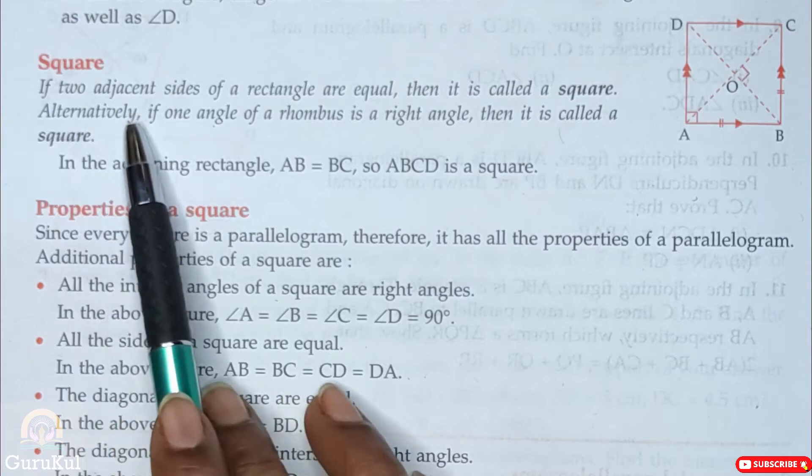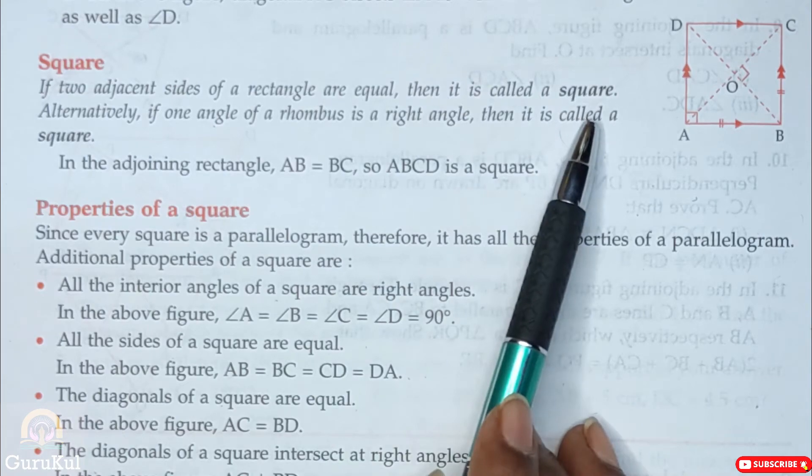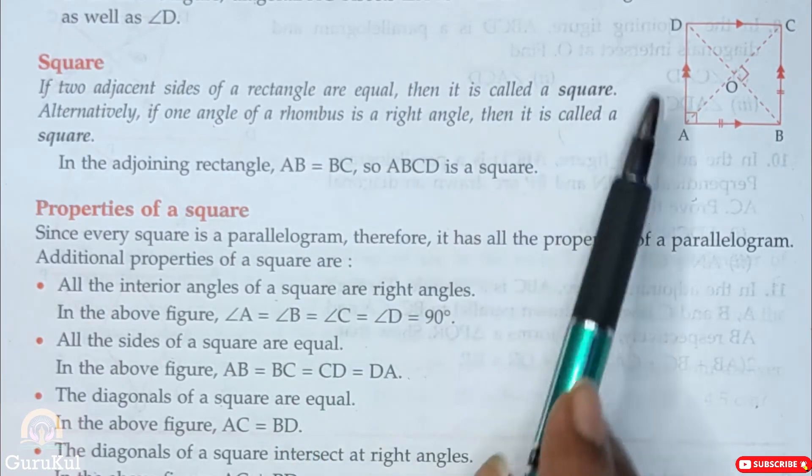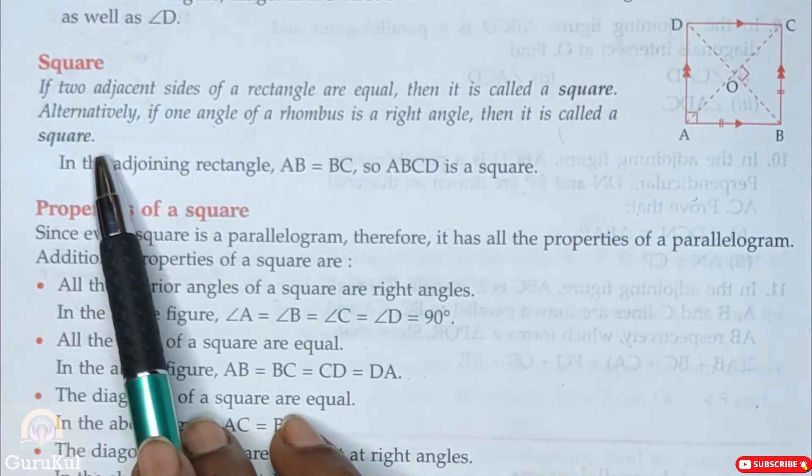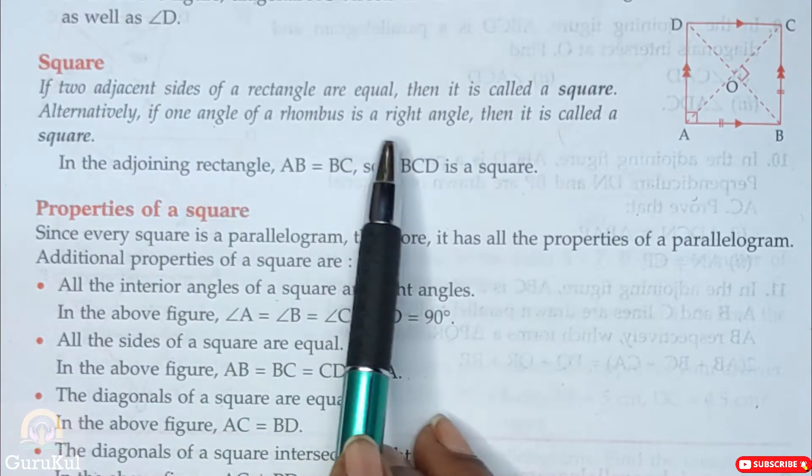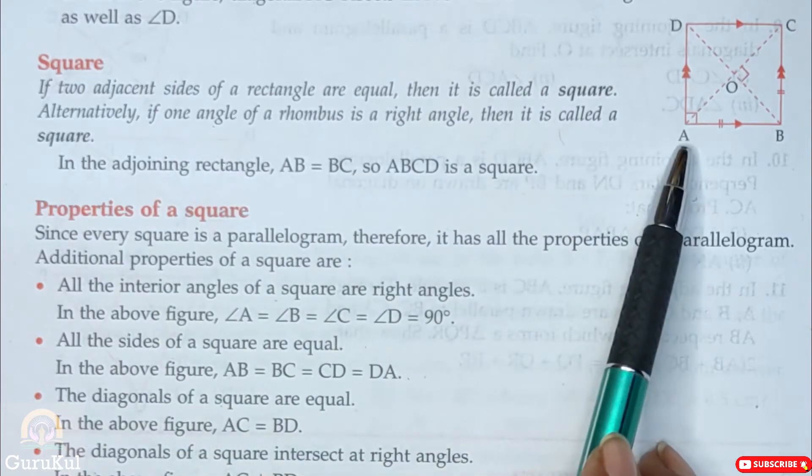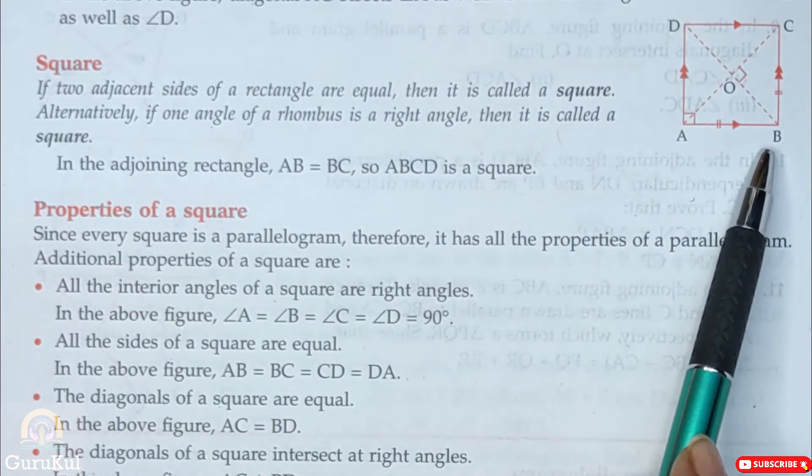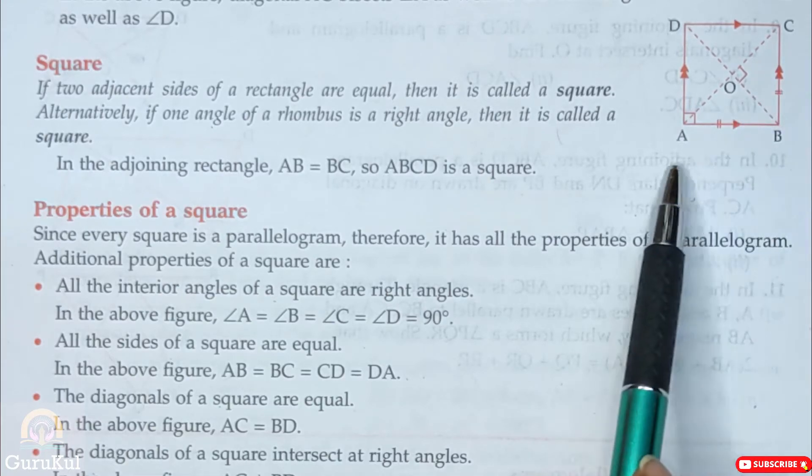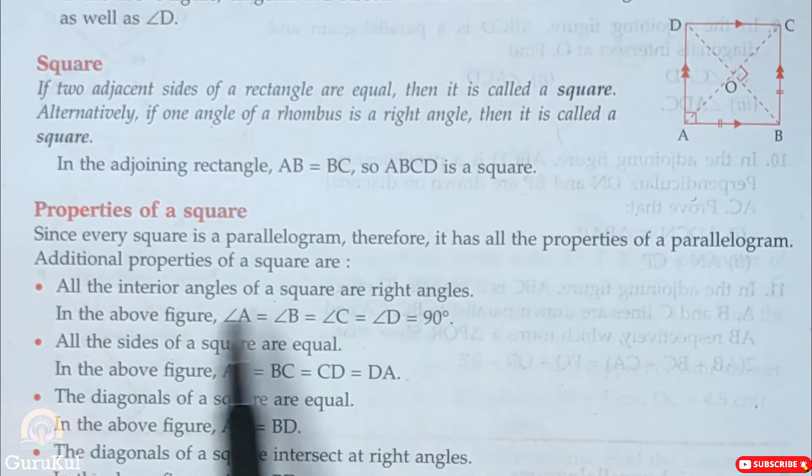Next is square. If two adjacent sides of a rectangle are equal, then it is called a square. Adjacent side means side by side. Alternatively, if one angle of a rhombus is a right angle, then it is called a square. As you can see in this figure, AB is equal to BC. So ABCD is a square. Now let's read about its properties.